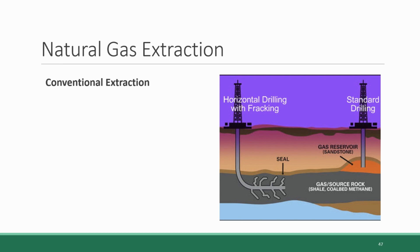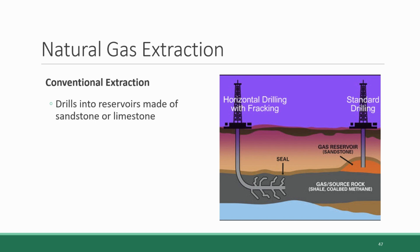There are a couple of approaches for extracting natural gas out of the earth. The conventional extraction method, shown in this diagram as standard drilling, involves drilling down through the gas cap into reservoirs made of sandstone or limestone. If you've ever handled sandstone or limestone, you probably noticed it has a high permeability — the material is put together very loosely and crumbles relatively easily — meaning the natural gas trapped within the pores and pockets can flow freely through the material and be pumped out.